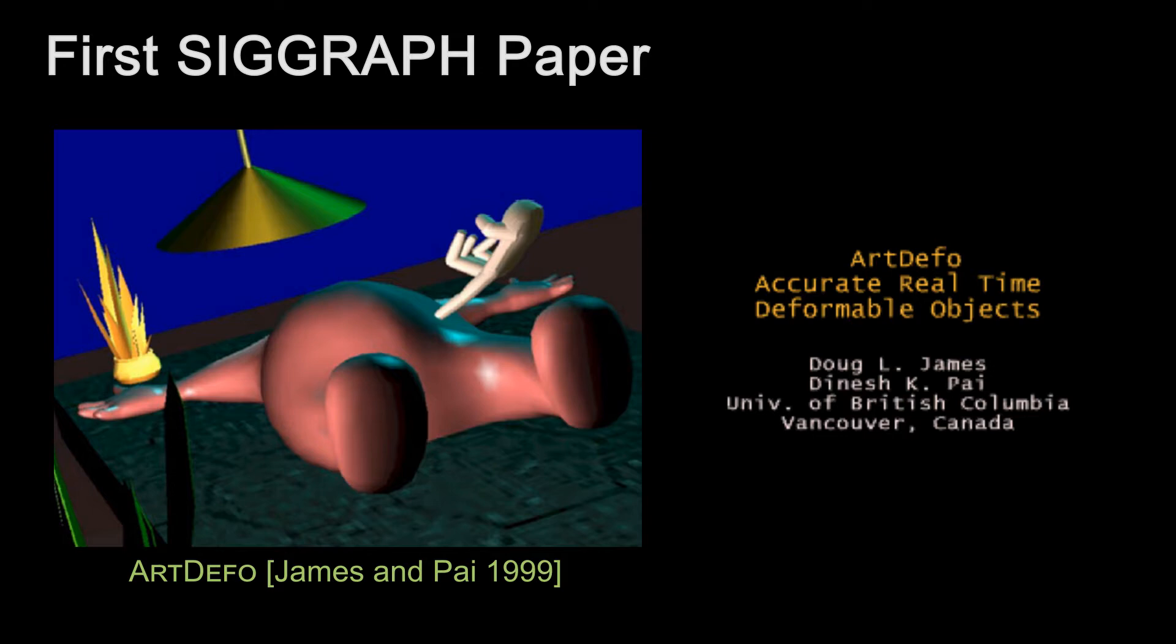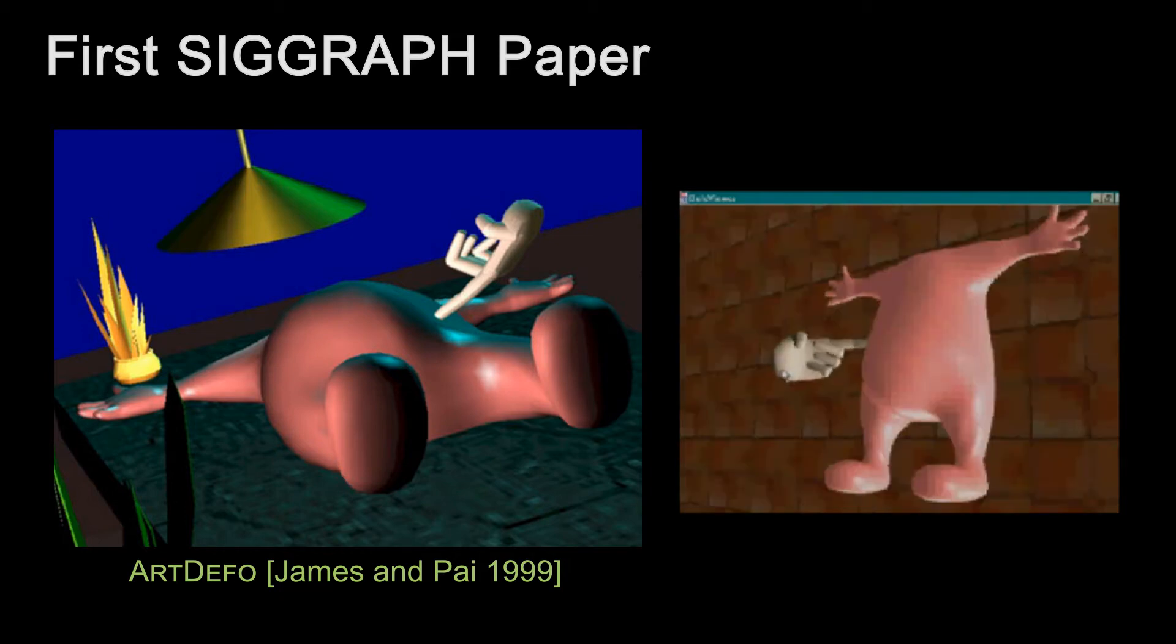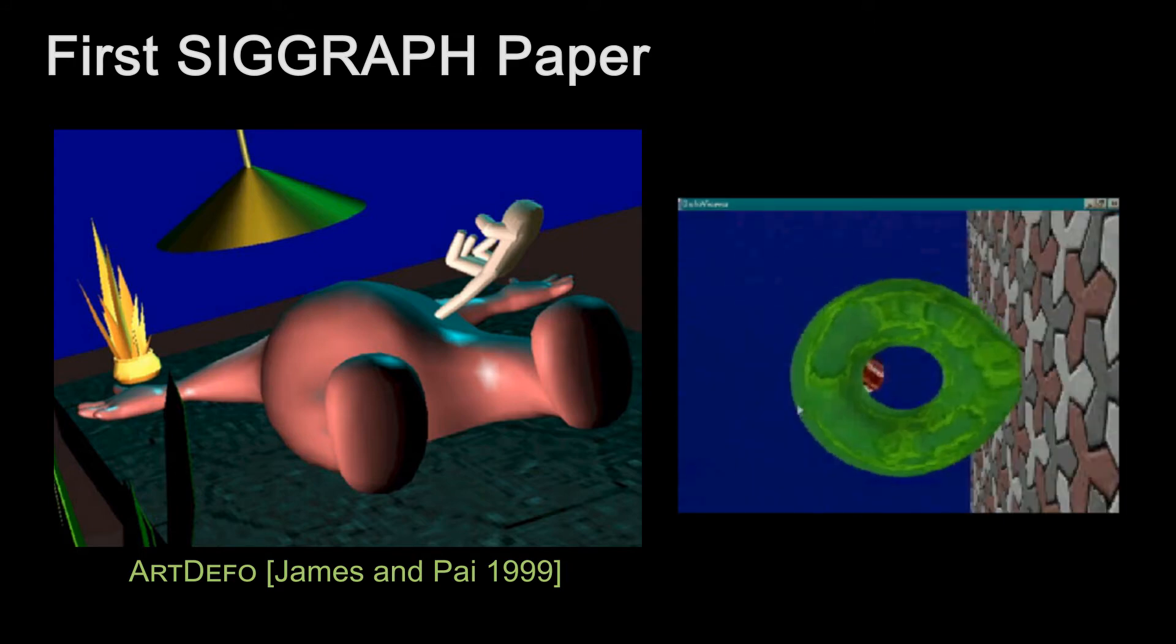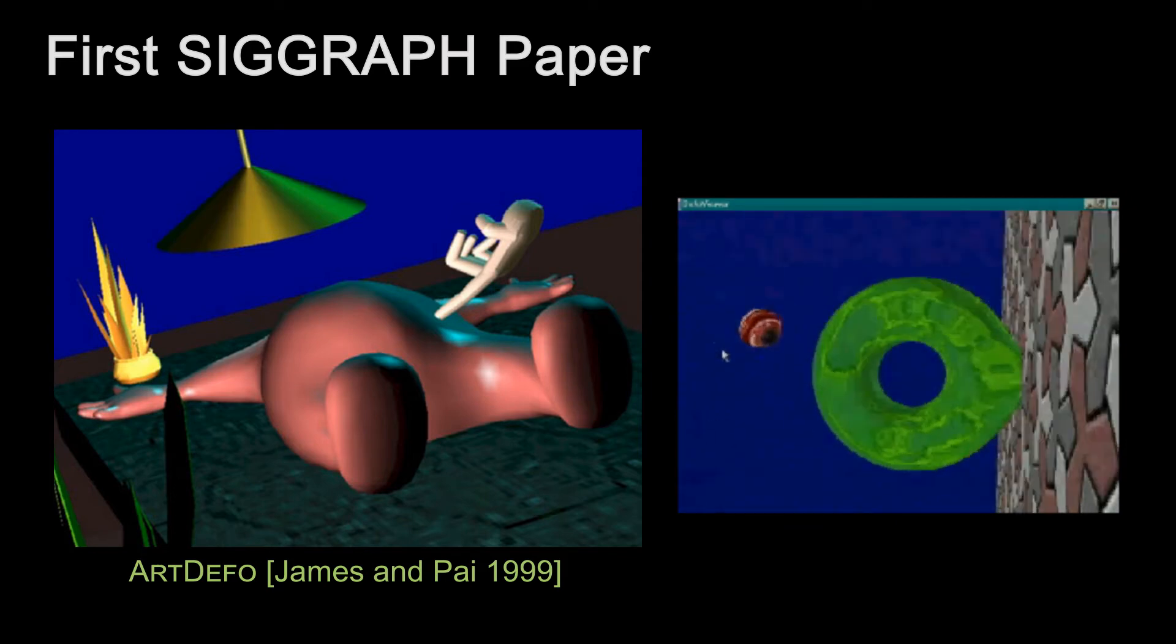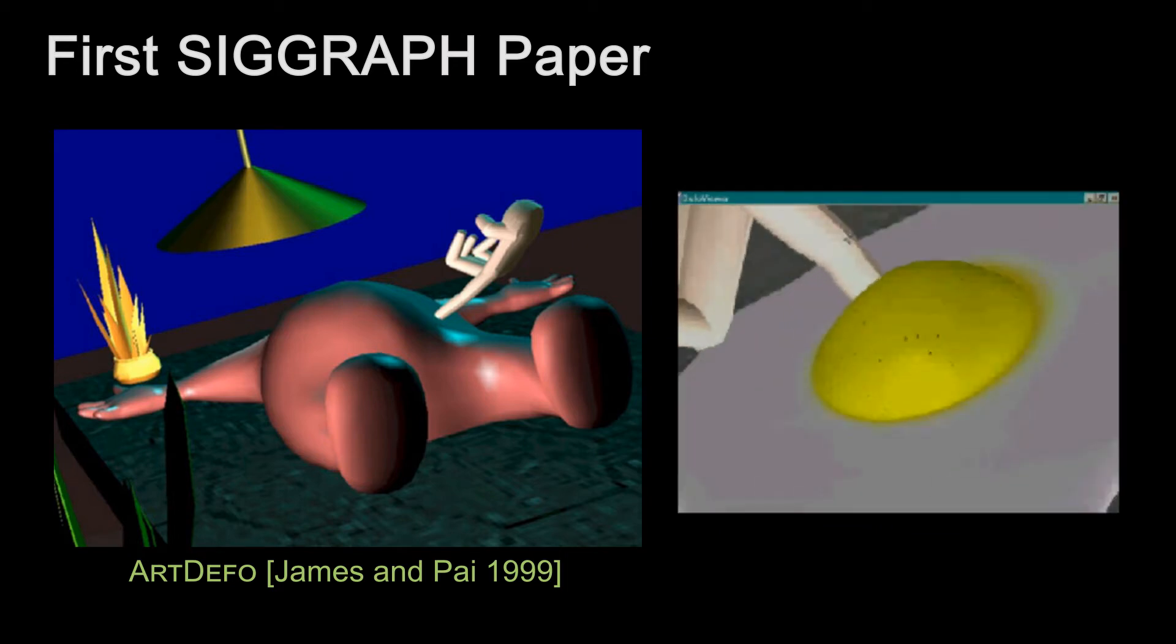My first SIGGRAPH paper was ArtDefo in 1999 with Dinesh and this was a crazy paper. I don't think anybody was harmed by this work except maybe the reviewers. The paper showed up without a video. Later I submitted a video to the animation festival. Of course that's not the same thing as the technical papers program. But somehow both of them got in and the rest is history. The examples of this paper are probably the weirdest of any that we've written. And it was a fun time where I learned a lot along the way.